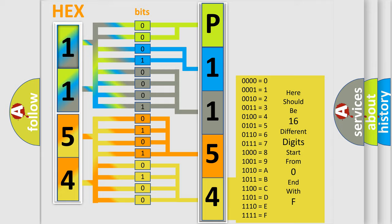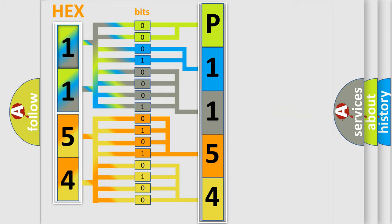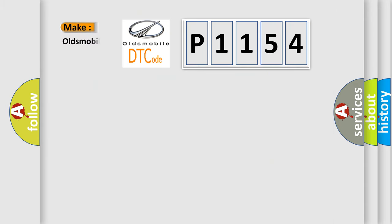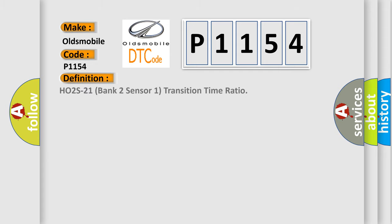We now know in what way the diagnostic tool translates the received information into a more comprehensible format. The number itself does not make sense to us if we cannot assign information about what it actually expresses. So, what does the diagnostic trouble code P1154 interpret specifically for Oldsmobile car manufacturers? The basic definition is: HO2S21 Bank 2 Sensor 1 Transition Time Ratio.